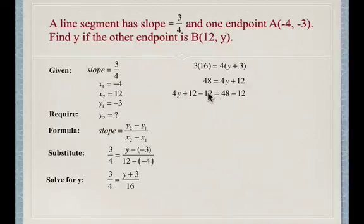So all I've done is switch this around and subtract 12 from both sides. The right side simplifies to be 36, and the left side simplifies to be 4y. We divide both sides by 4 to isolate y, and we get y equals 9.